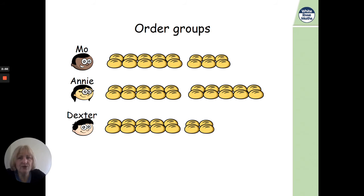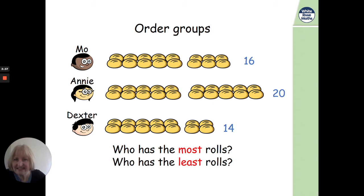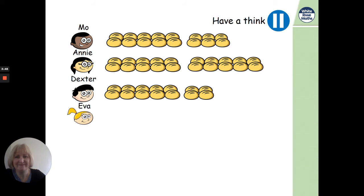Okay, this page says order groups. So, we've got Mo and Annie and Dexter, and it looks like they've been busy baking. Let's see. Who has the most rolls? Well, we can see the bundles of 10, can't we? So, there's 10 and 6, 16 for Mo. There's 10 and another 10. 10 add 10 is 20 for Annie, and Dexter's made 10 and 4 more. 10 add 4 is 14. So, who's made the most? Do you agree? It's Annie. 16, 20, 14, Annie. Who has the least rolls? The smallest number of rolls? Dexter. He's got 14, hasn't he?